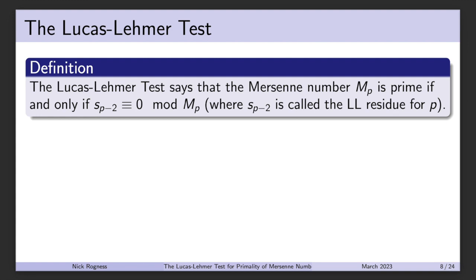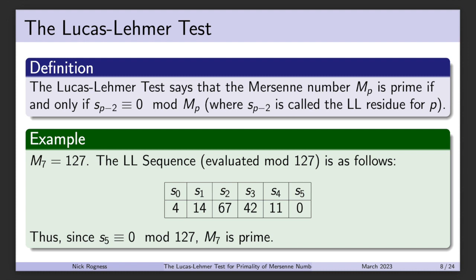Let's go through an example. Take M7, which is 127. If we compute the Lucas-Lehmer sequence evaluated mod 127, we get: s0 = 4, s1 = 14, s2 = 67, s3 = 42, s4 = 11, s5 = 0. We're looking at the (p minus 2)nd term, so for M7 that's s5. Since s5 is congruent to 0 mod 127, we know M7 is prime.